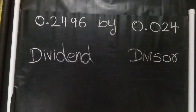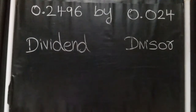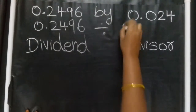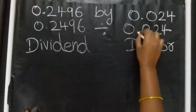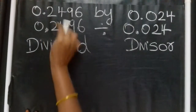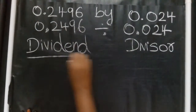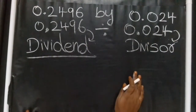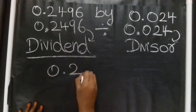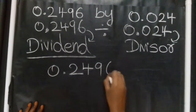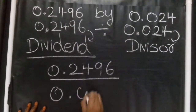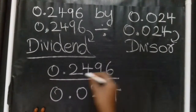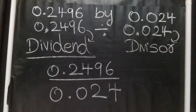Division of a decimal number by another decimal number. So 0.2496 divided by 0.024. Here we have one decimal number divided by another decimal number — 0.2496 is the dividend and 0.024 is the divisor. So we have two decimal points here, one in the divisor and one in the dividend.